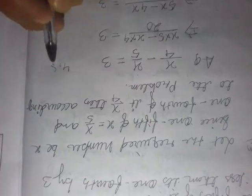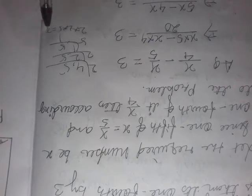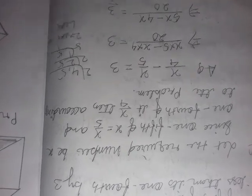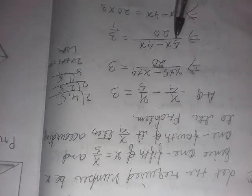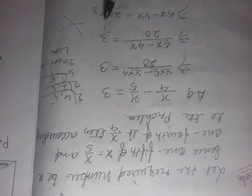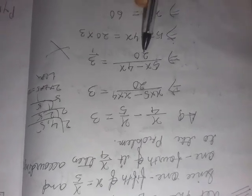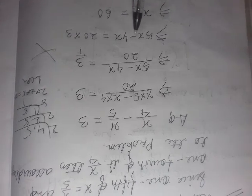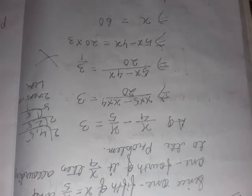LCM of 4 and 5: 2 times 2 is 4, and 5 times 1 is 5, so LCM is 20. Now: 5x minus 4x by 20 equals 3. By cross multiplication: 5x minus 4x equals 20 times 3 equals 60. Therefore 1x equals 60, so the required number x is 60.